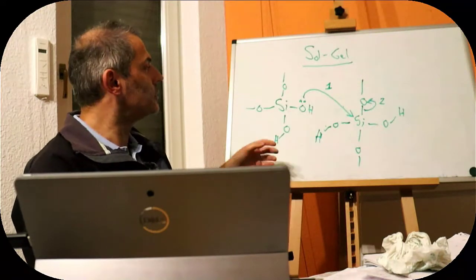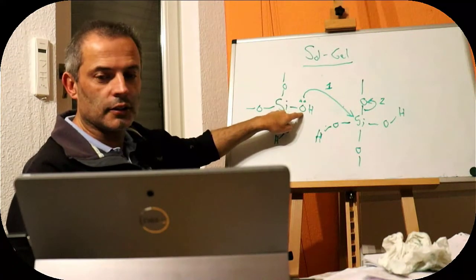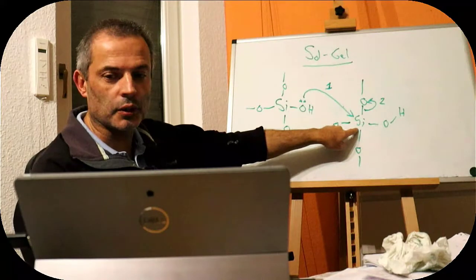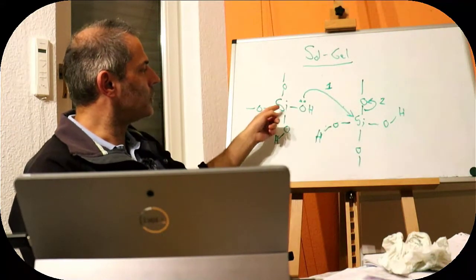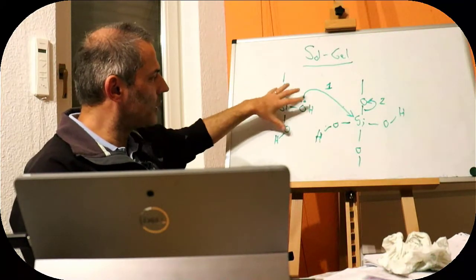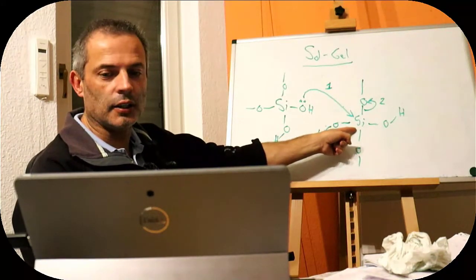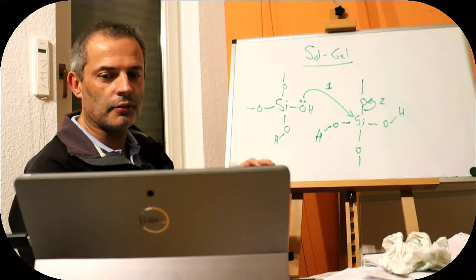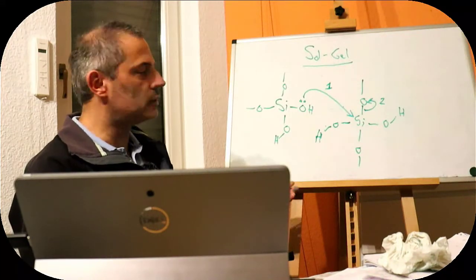The problem with this reaction is, the more electron withdrawing we make the silicon, the less likely this oxygen is to attack, but the better this one is at being attacked. And the other way around, the better we make this OH at attacking by making it more negative, by feeding electron density in, the less likely it is to be attacked. So we end up in an impasse. And we have to go, or it typically runs, via an acid or base-catalyzed mechanism.